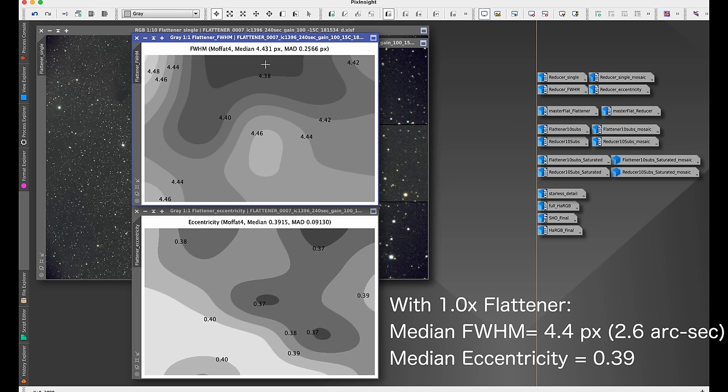The full width half maximum, the median value was 4.4 pixels. At 0.6 arc seconds per pixel, that's something like 2.6 arc seconds in terms of the full width half maximum. The eccentricity, we have a median of 0.39. PixInsight says that anything under 0.42 is going to look perfectly round or it's not going to look noticeably out of round at least. So these seem like reasonable values to me, but if you want to disagree, feel free in the comments.